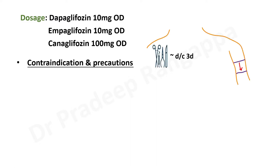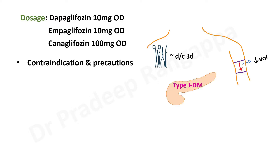We need to be aware of contraindications and precautions because these drugs cause natriuresis and glycosuria. Before surgery, this drug must be discontinued three days prior to any major surgery because it can cause hypovolemia, which can lead to hypotension due to diuresis — sodium excretion occurs alongside glycosuria. Type 1 diabetes is a contraindication for using SGLT2 inhibitors. In type 2 diabetes patients with a previous history of diabetic ketoacidosis, this drug should also be avoided.